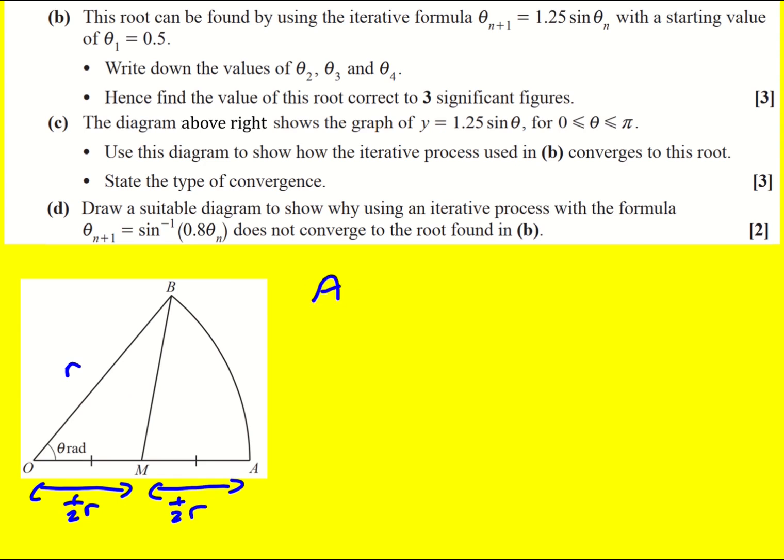So first up, area of the sector. That's actually just going to be a half R squared theta. That's a formula to learn. It comes from the fact that we've got theta over 2π (we're working in radians here), so that's the fraction of the circle that we have, then we times by πR². So the π's cancel and we're left with half R² theta.